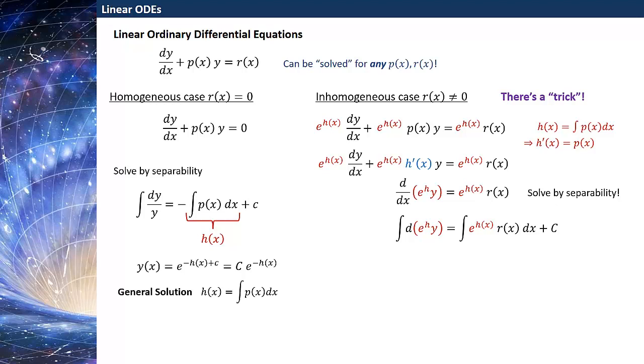The left hand side just becomes e to the h times y. That's what I mean by taking the integral of a differential. So I have e to the h times y equals the mess on the right hand side, and I'm almost there. Now I just solve for y(x) by moving e to the minus h(x) over to the right hand side. So y(x) is e to the minus h(x) times this combination of the integral e to the h times r plus the constant c, and h(x) is the integral of p(x)dx.